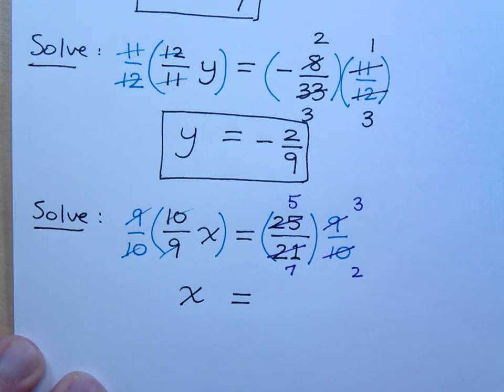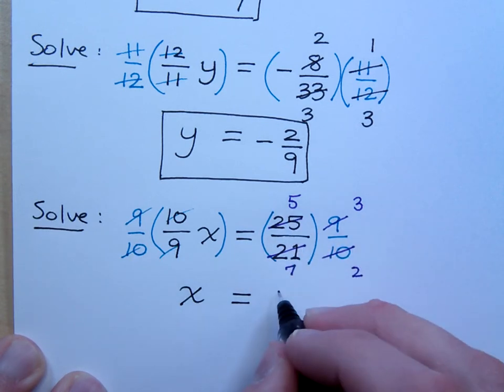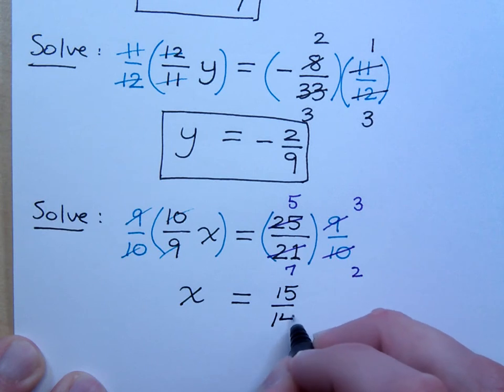And you know what? If you're not sure, what you can do is just go ahead and multiply the factors that you have to kind of clean things up. So here, if I multiply, what do I have? 15 over 14. I get 15 over 14. So 15 and 14 can't be reduced any further. They have no common factor, so this guy is good.